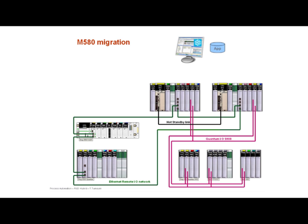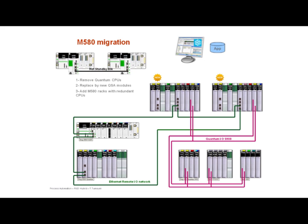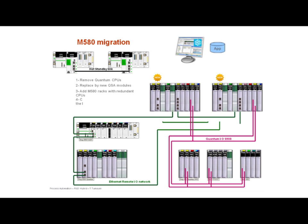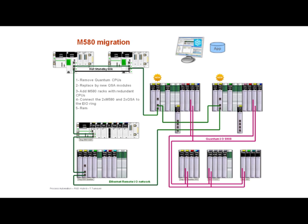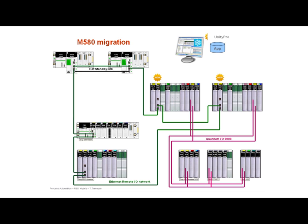Let's imagine the customer has a Quantum hot standby S908 architecture as shown here. The configuration already supports an Ethernet IO ring in order to anticipate the future migration to a plant structure architecture. For the integration of the M580, you have to remove the Quantum CPUs and replace them with QSA modules. You'll add redundant M580 PLCs with redundant CPUs. Connect the CPUs and the QSA to the Ethernet IO ring. Remove the old Quantum Ethernet IO CRP. And finally, simply convert the Quantum Unity application to M580 and transfer it to the M580 CPUs.